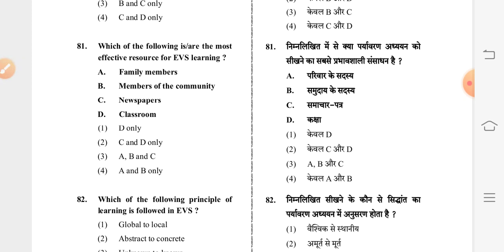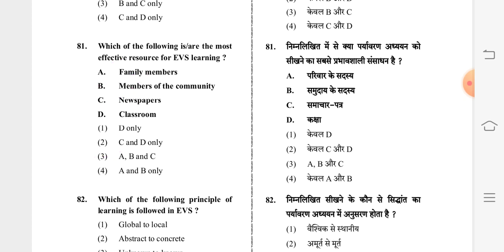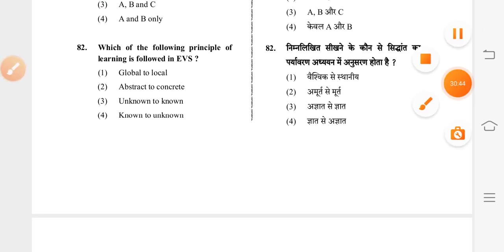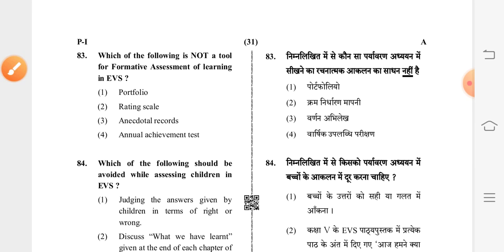Question 81: which of the following is the most effective resource for EVS learning? Third option is correct: A, B, C — family members, members of the community, and newspapers. Question 82: which of the following principle of learning is followed in EVS? Fourth option is correct: known to unknown. Question 83: which of the following is not a tool for formative assessment of learning in EVS? Fourth option is correct: annual achievement test.